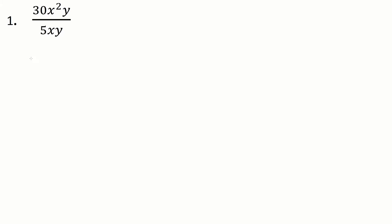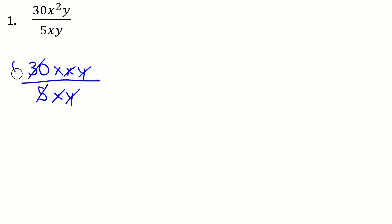One way you could write this out, just to see what's in common, you could write 30 then x, x, y — getting rid of the exponents — divided by 5, x, y. Now we're literally just canceling out stuff that's in common. So x goes with that x, that y goes with that y. 30 divided by 5 leaves you with a 6, so our final answer would be 6x.